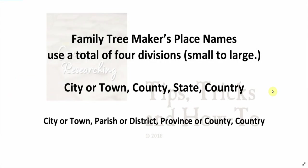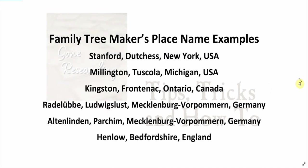So how are place names entered in Family Tree Maker? Generally, place names start with the smallest division and work up to the largest division of a location using a total of four divisions: City or Town, County, State, Country — or City or Town, Parish or District, Province or County, Country. Let's look at some examples. We have Stanford, Dutchess, New York, USA; Millington, Tuscola, Michigan, USA; Kingston, Frontenac, Ontario, Canada.